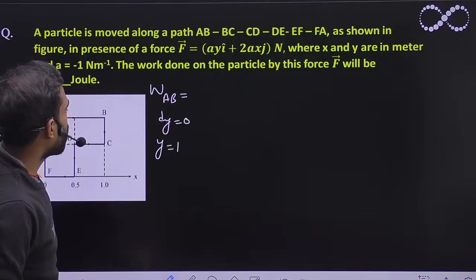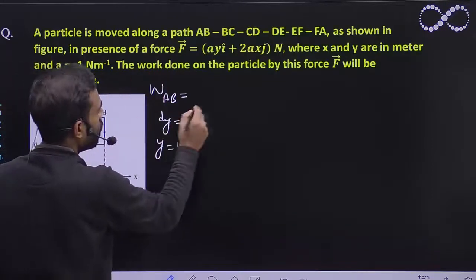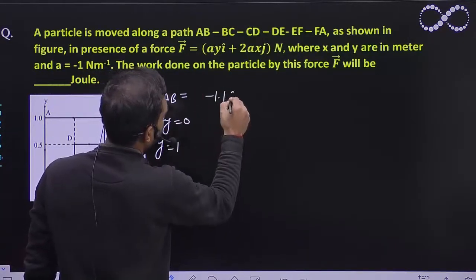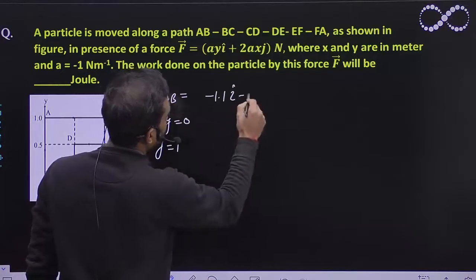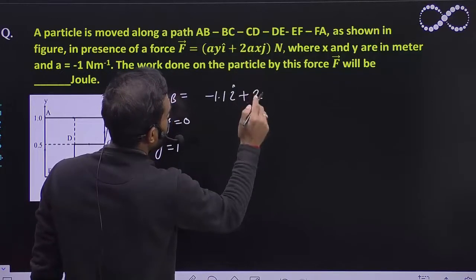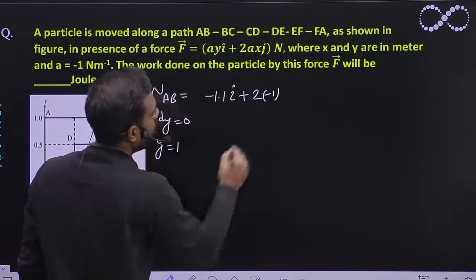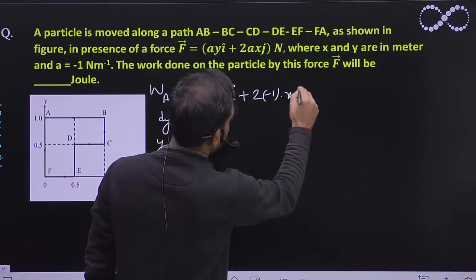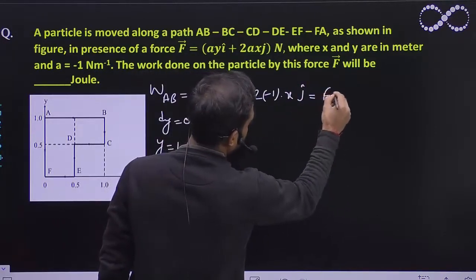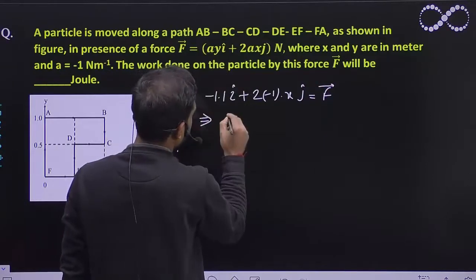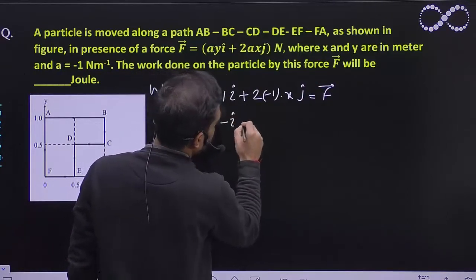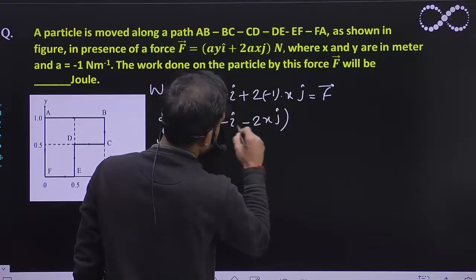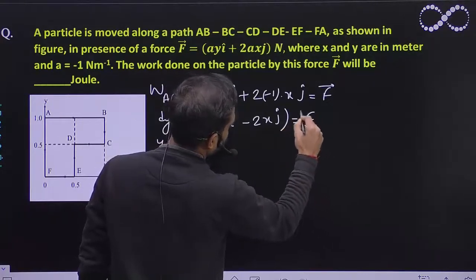A is equal to minus 1, as given in the question. So with A = -1 and Y = 1: 1 into 1 gives 1 for the î component, and 2A gives minus 2 for the X·ĵ component. So the force vector equals minus î minus 2X ĵ.